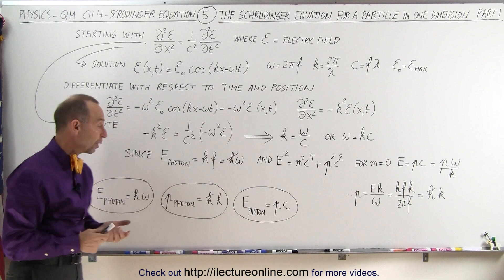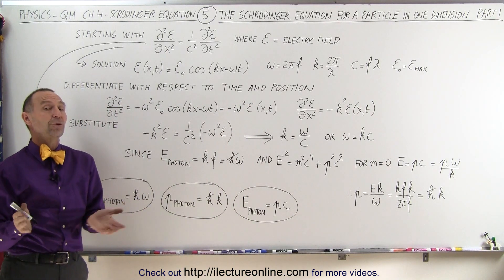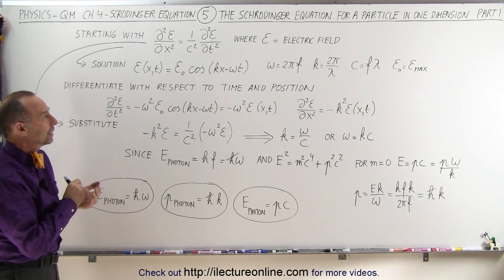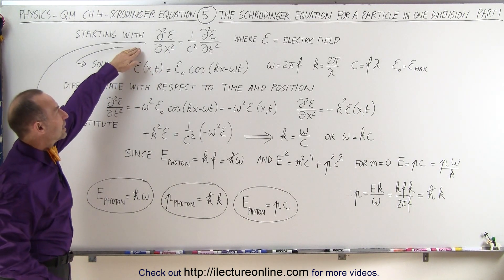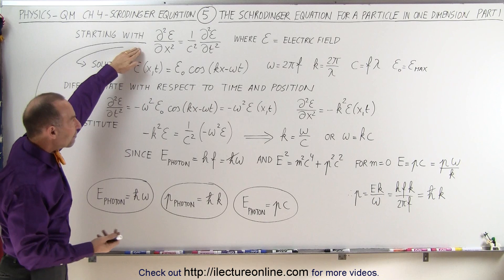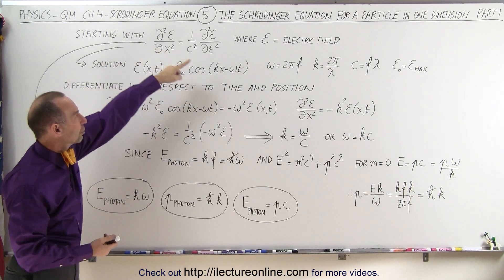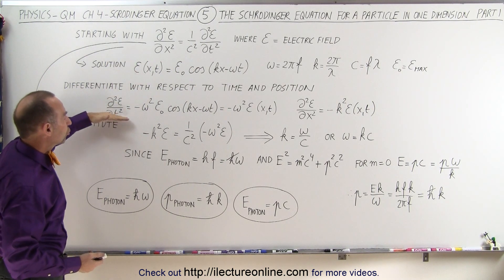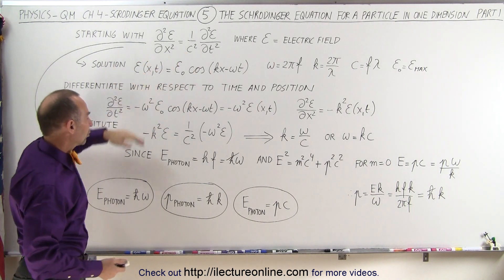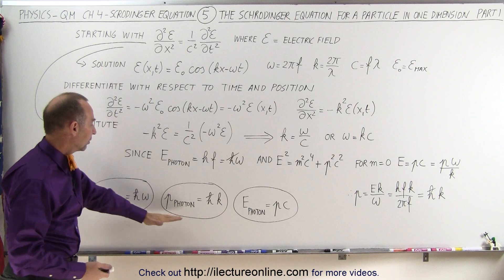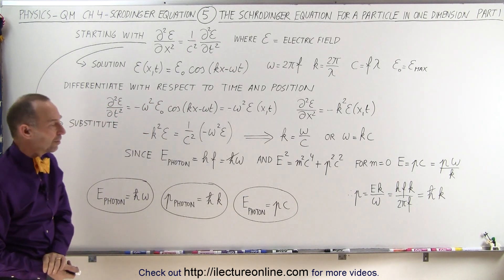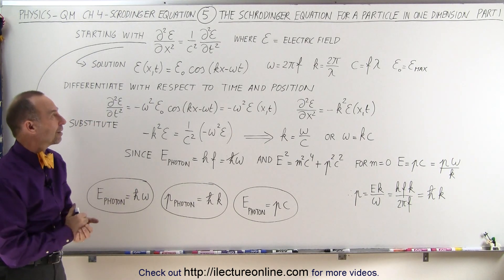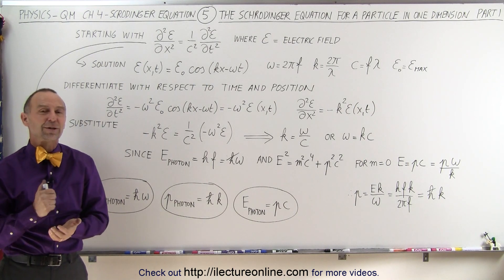We now have three equations to carry over to part two. The whole object here is to come up with a Schrödinger equation for a single particle in one dimension. We started with the general wave equation for electromagnetic radiation, used its solution to derive the energy and momentum of a photon. Let's bring that over to part two, where we'll show you how we continue to derive the Schrödinger equation for a particle in one dimension. Thank you.